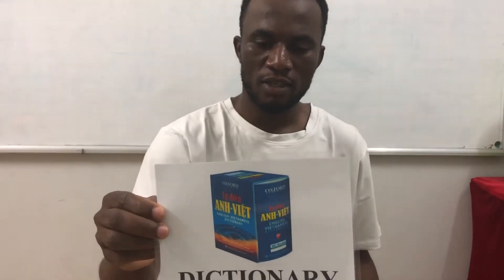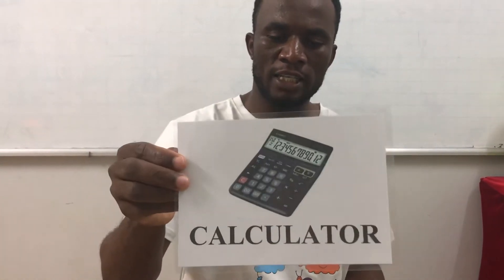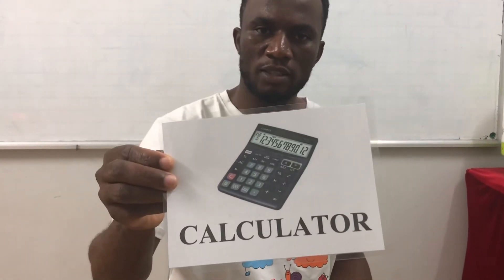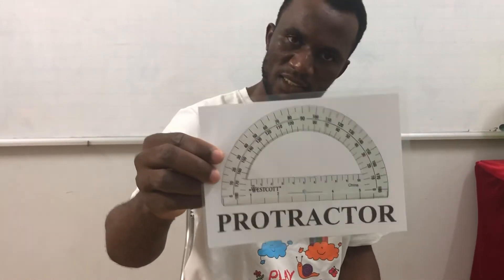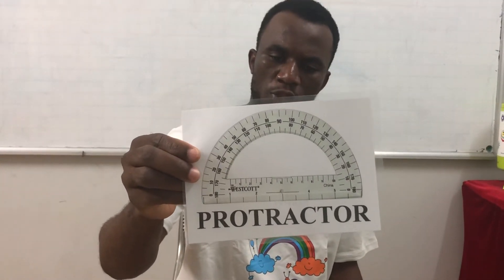Now, we have a very simple structure. What is this? It's a dictionary. What is this? What is this? It is a calculator.